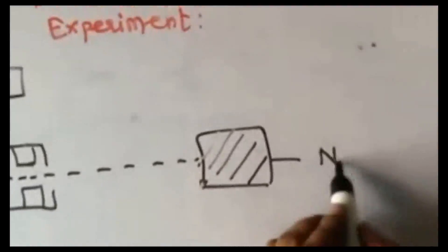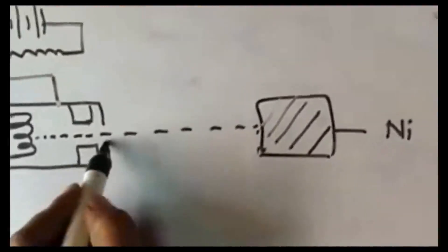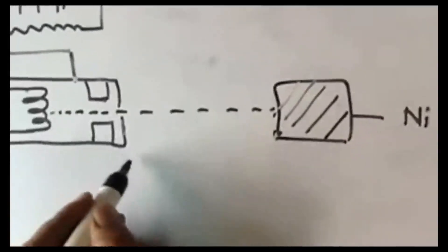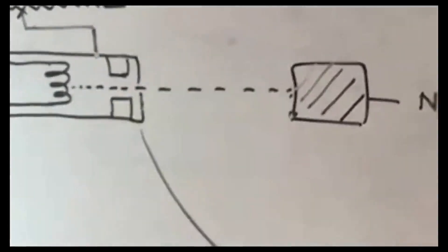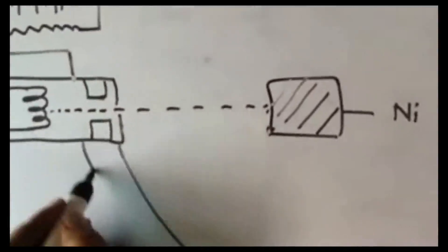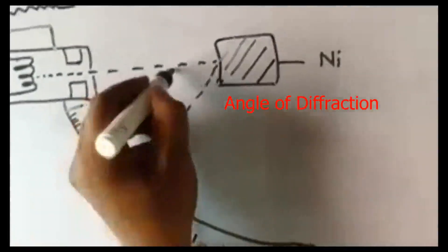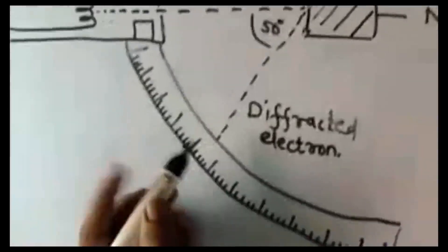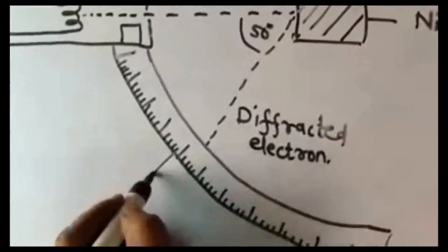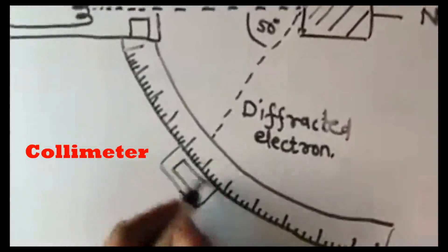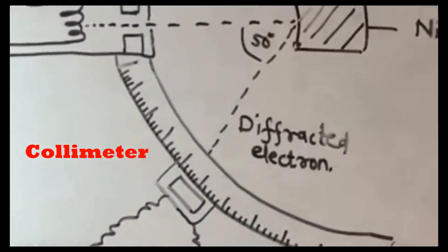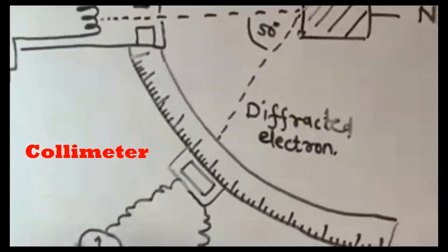A high tension battery is used. The metal block is a nickel crystal or nickel plate. A slit is used to filter the beam into a fine single beam. The angle of diffraction is measured. The setup includes a collimator that helps determine the current, which is connected to a galvanometer. At which angle the electron is diffracted is measured — generally at 50 degrees.